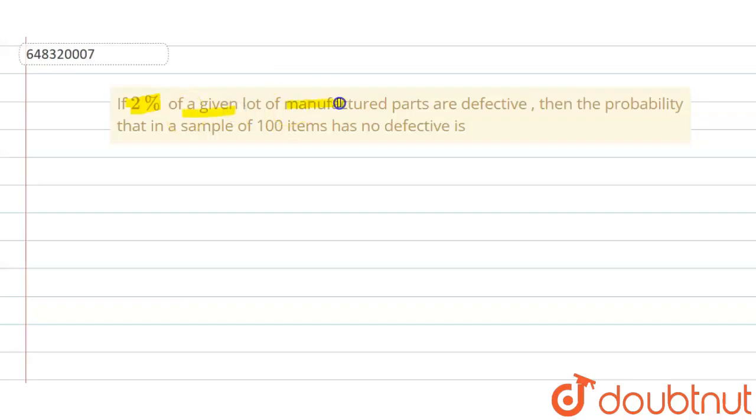2% of a given lot of manufactured parts are defective. Find the probability that a sample of 100 items has no defective. So given that 2% of the manufactured parts are defective and total number of items is 100, that means n equals to 100.